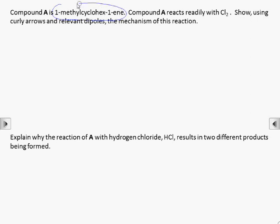We need to start by drawing out 1-methylcyclohex-1-ene, six carbons in a ring, with an alkene functional group between the first and the second, then a methyl group on the first carbon.